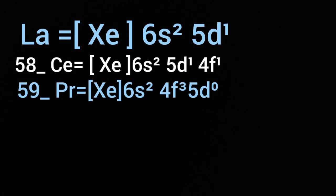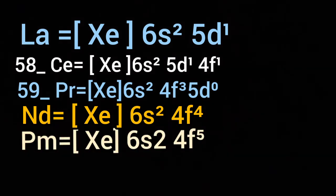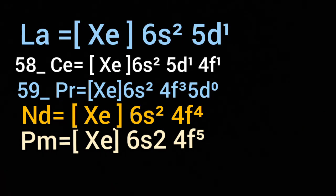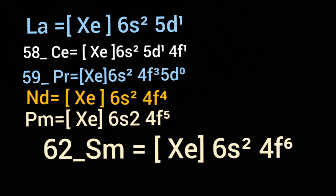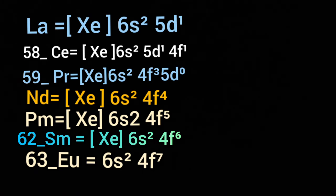In case of neodymium (atomic number 60), the electron configuration becomes [Xe] 6s2 4F4. For atomic number 61, the electron configuration becomes [Xe] 6s2 4F5, with no electron in 5D. For atomic number 62, the electron configuration is [Xe] 6s2 5D0 4F6. In case of europium, the electron configuration becomes [Xe] 6s2 5D0 4F7. Up to europium, 4F is progressively filled from praseodymium.